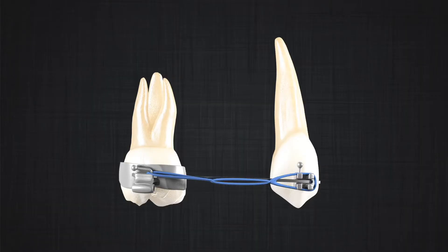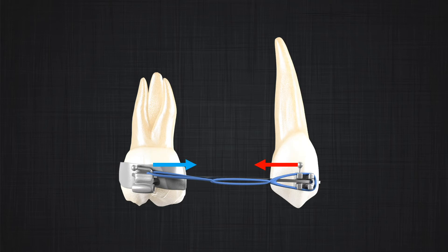How an object reacts depends on its mass. This causes a lot of confusion in orthodontics. When we apply a force from a molar to a premolar, the molar has a larger mass and moves slower than the premolar, which has a smaller mass — even though the action and reaction forces are always equal.